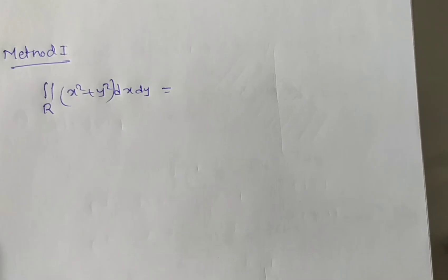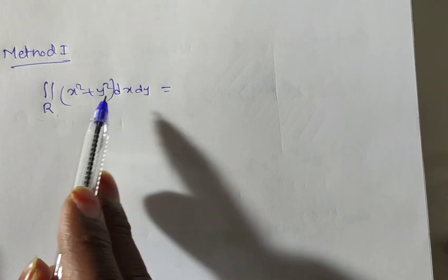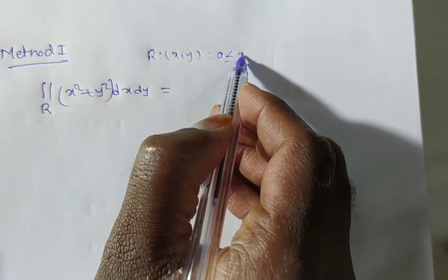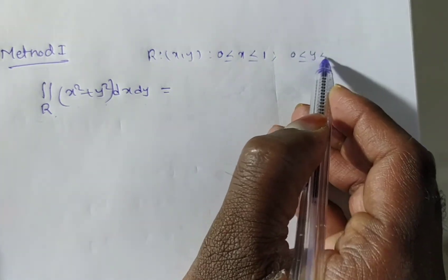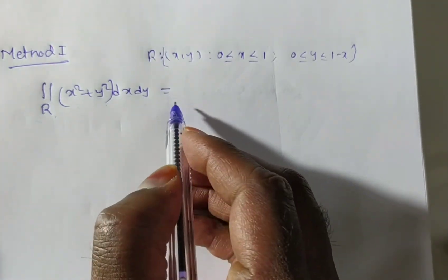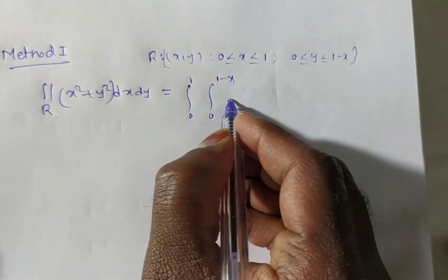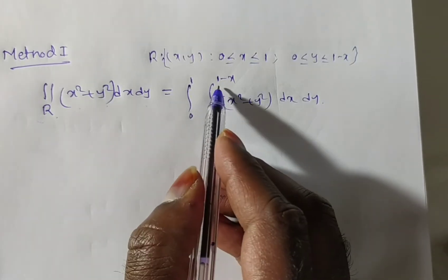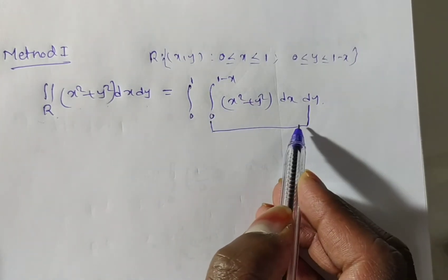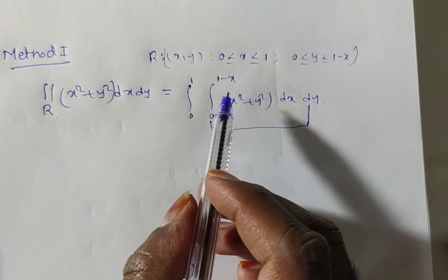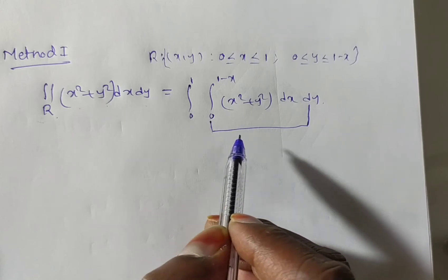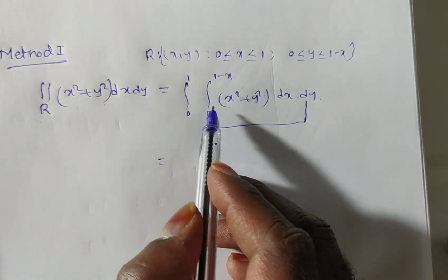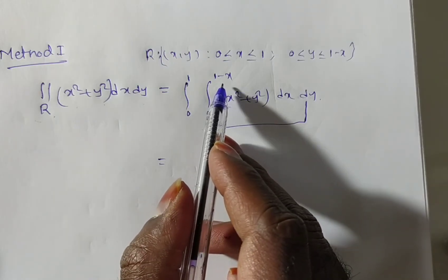Now the solution for Method 1. Double integral over R of x square plus y square dx dy. The region R is: 0 ≤ x ≤ 1 and 0 ≤ y ≤ 1 minus x. This equals integral from 0 to 1, integral from 0 to 1 minus x, of x square plus y square dy dx. Since the y limits are a function of x, we first integrate with respect to y.